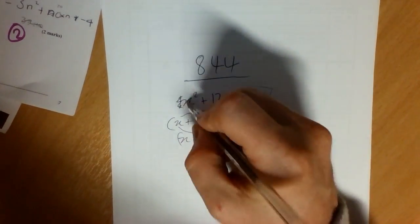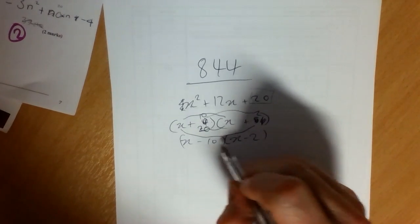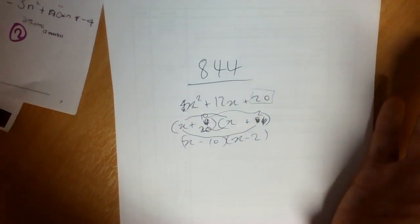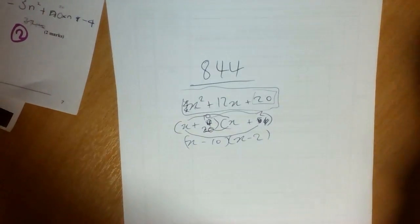But the point is, when the coefficient of x squared is 1, it's the most efficient use of your time just to muck around with different possibilities. Expand the bracket, do it to the smiley face and see whether you really get what you start with.